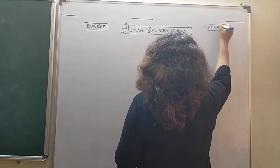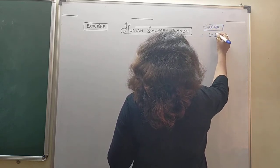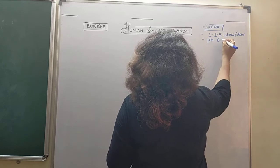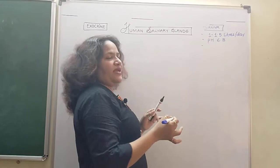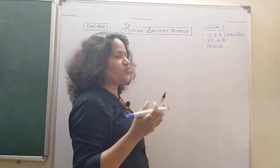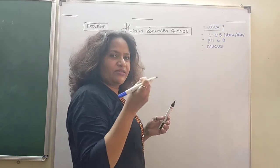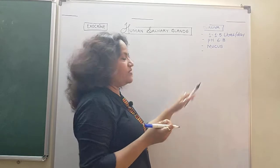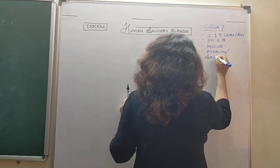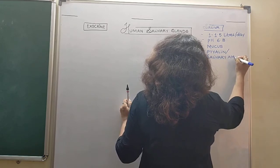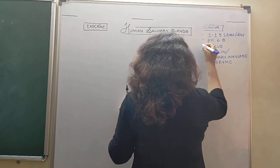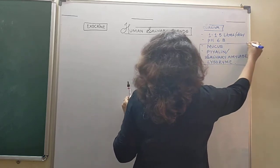The total secretion of saliva throughout the day is almost one to one point five liters, and its pH is almost six point eight. Saliva consists of mucus, which makes it slimy rather than just like water. It also consists of an enzyme formerly called ptyalin, now called salivary amylase, and additionally the enzyme lysozyme.